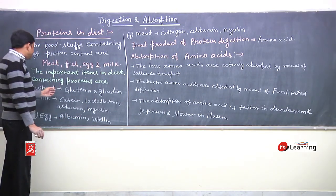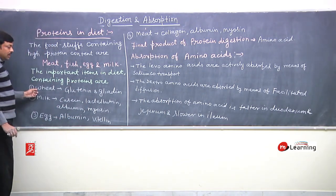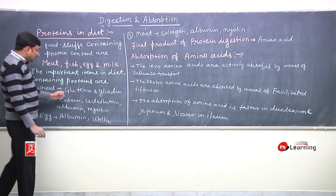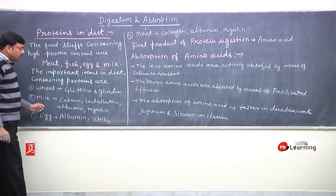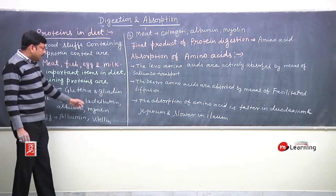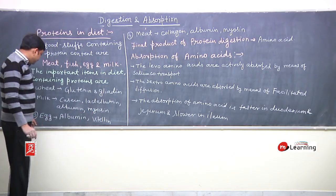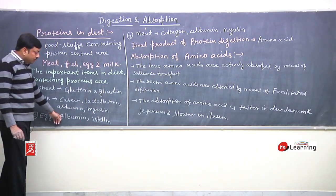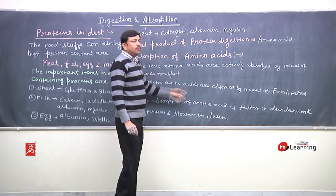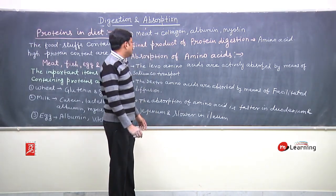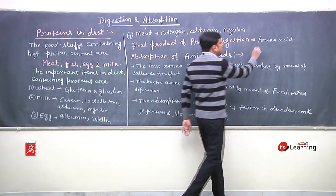The important items in diet containing proteins are: wheat — which contains glutenin and gliadin; milk — which contains casein, lactalbumin, and albumin; egg — which contains albumin and vitellin; meat — which contains collagen, albumin, and myosin. The final product of protein digestion is amino acids.